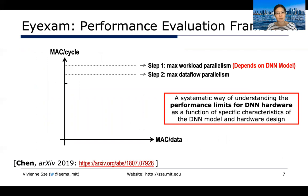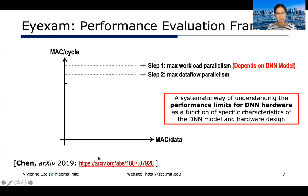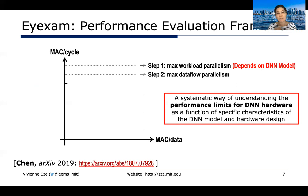One way to evaluate the performance or throughput of a system is using the Eyexam framework we've developed in our group — a systematic way of understanding the performance limit of any given DNN hardware as a function of the specific DNN model characteristics and the hardware design. It has two axes: the vertical axis is the number of MACs per cycle, and the horizontal axis is MACs per data, representing amount of data reuse. The optimum case is to increase the number of MACs per cycle — the higher up on the y-axis, the higher the throughput.